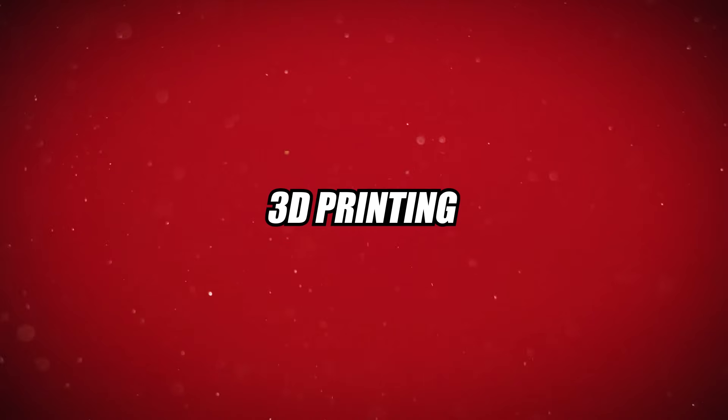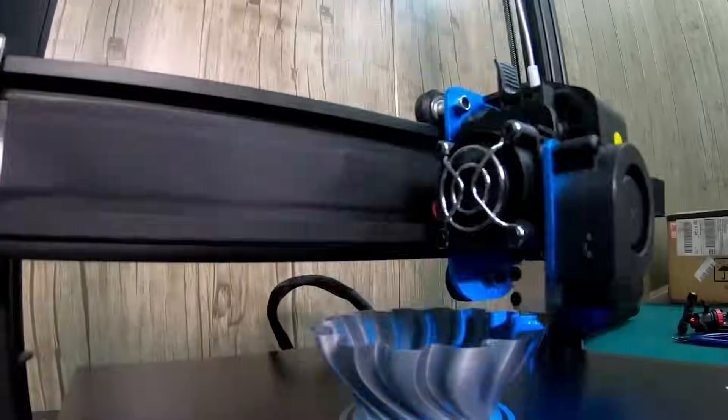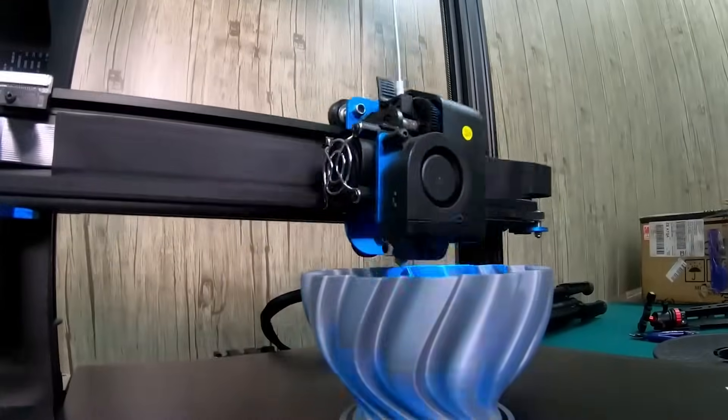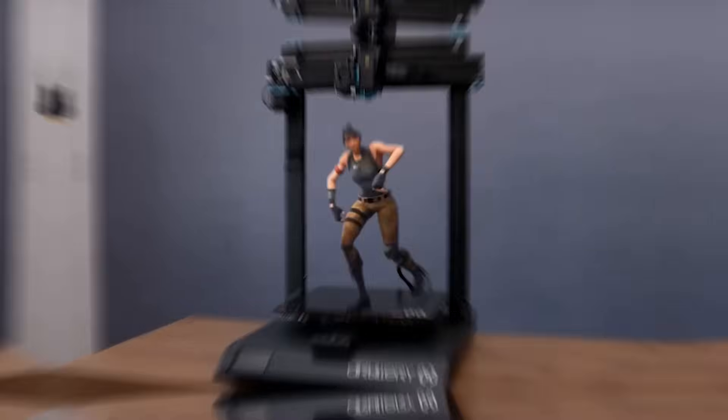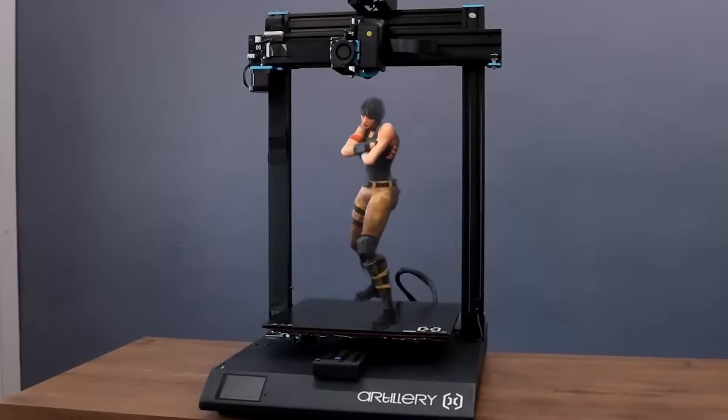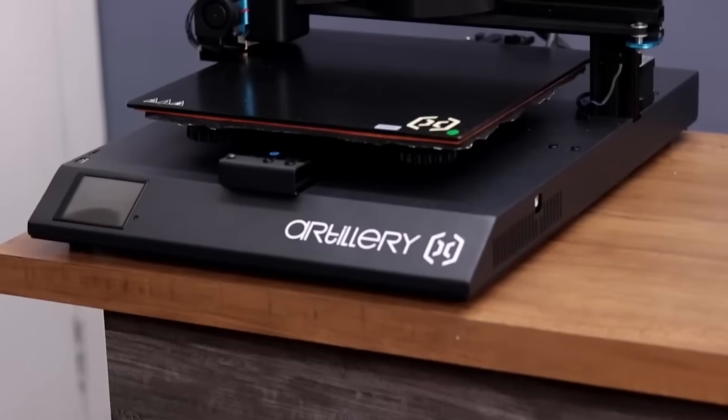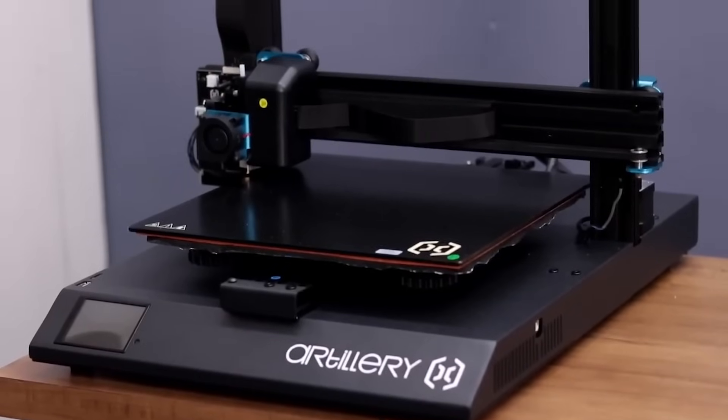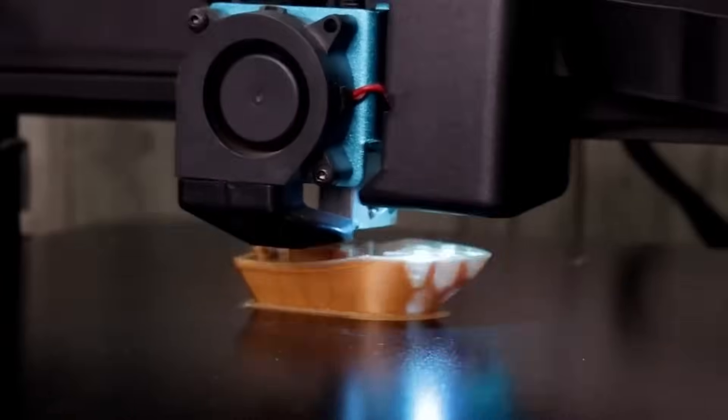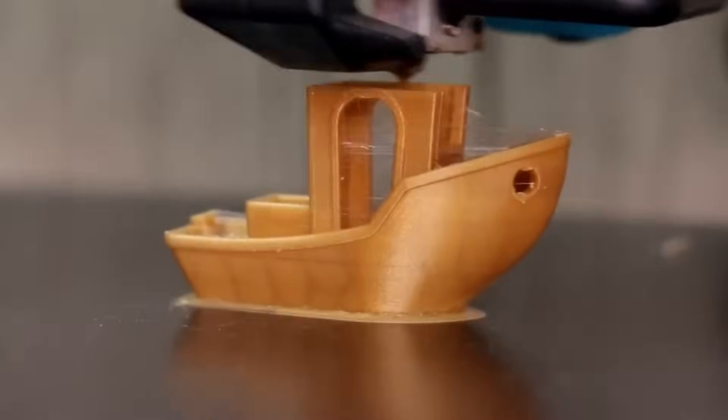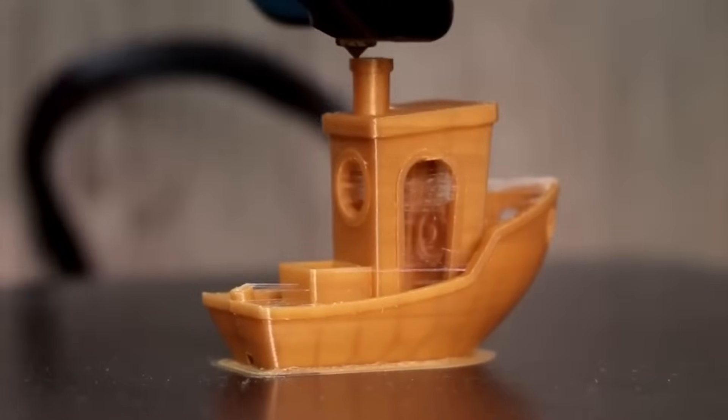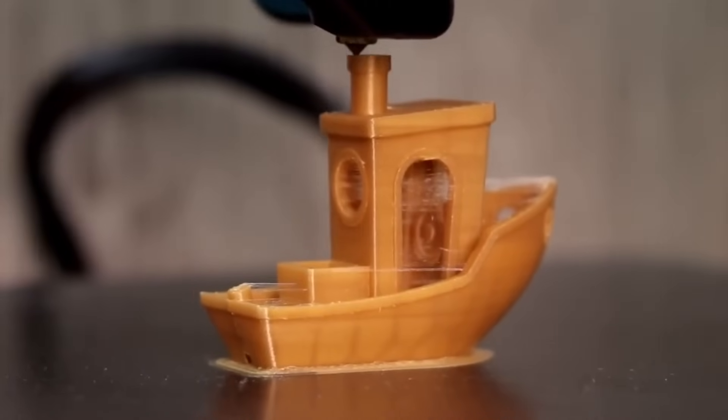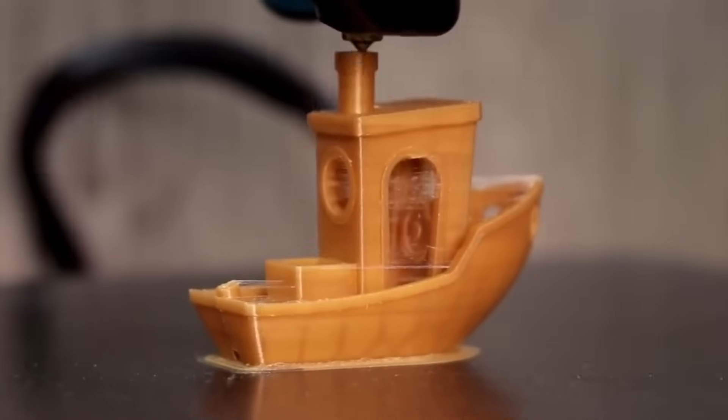3D printing: watching objects appear from nothing. If CNC machines carve away material to reveal objects, 3D printers do the opposite. They build them from the ground up. This technology has become one of the most satisfying processes to watch. Layer by layer, a nozzle extrudes melted plastic, resin, or even metal powders, slowly constructing a shape from nothing. The process is slow but mesmerizing, like watching a building rise brick by brick.